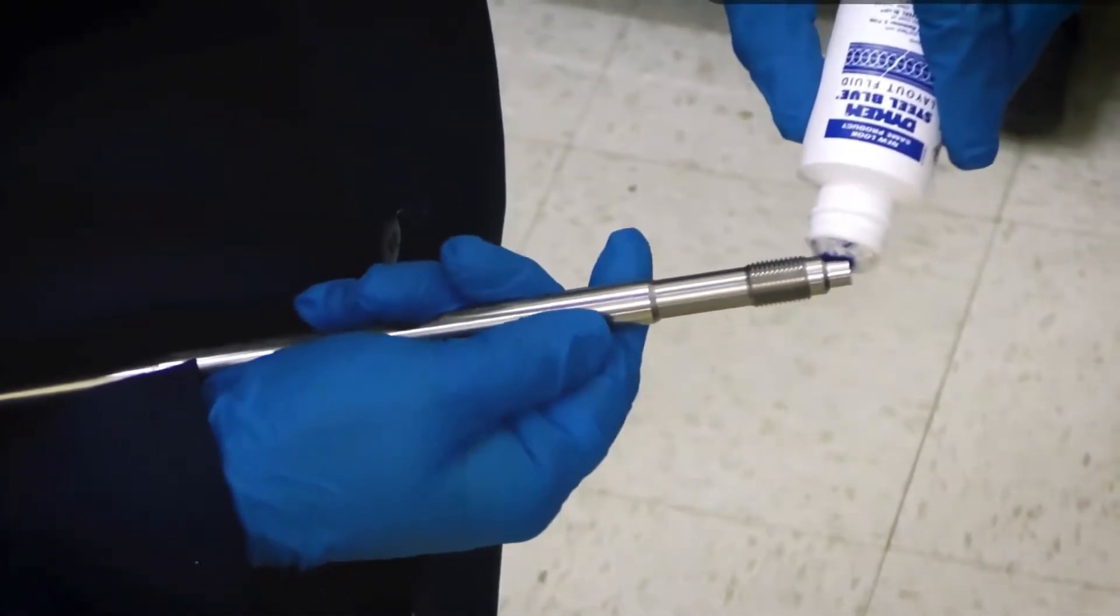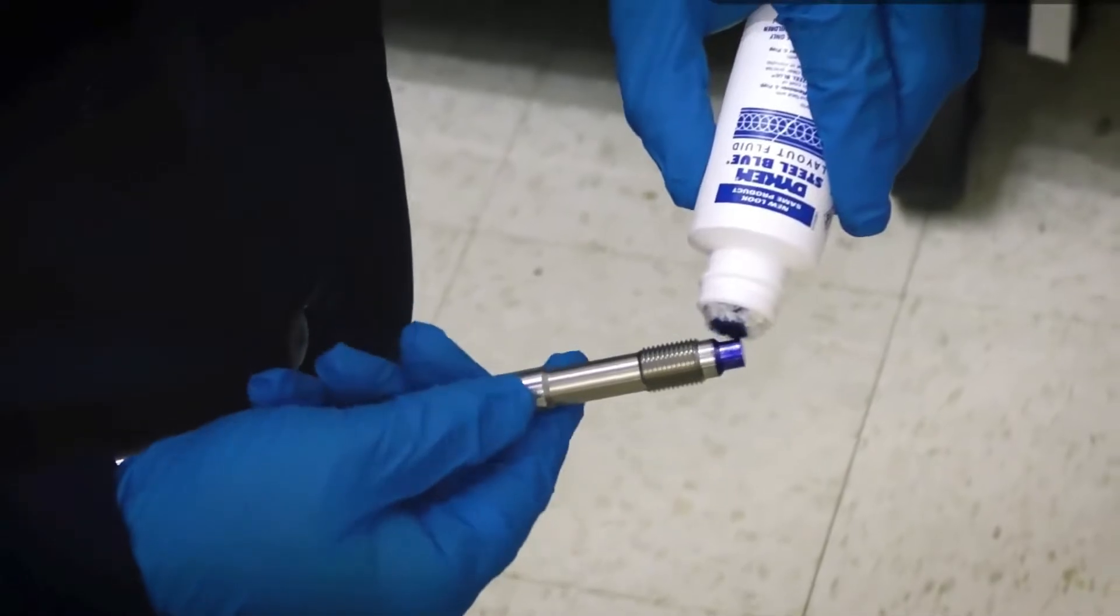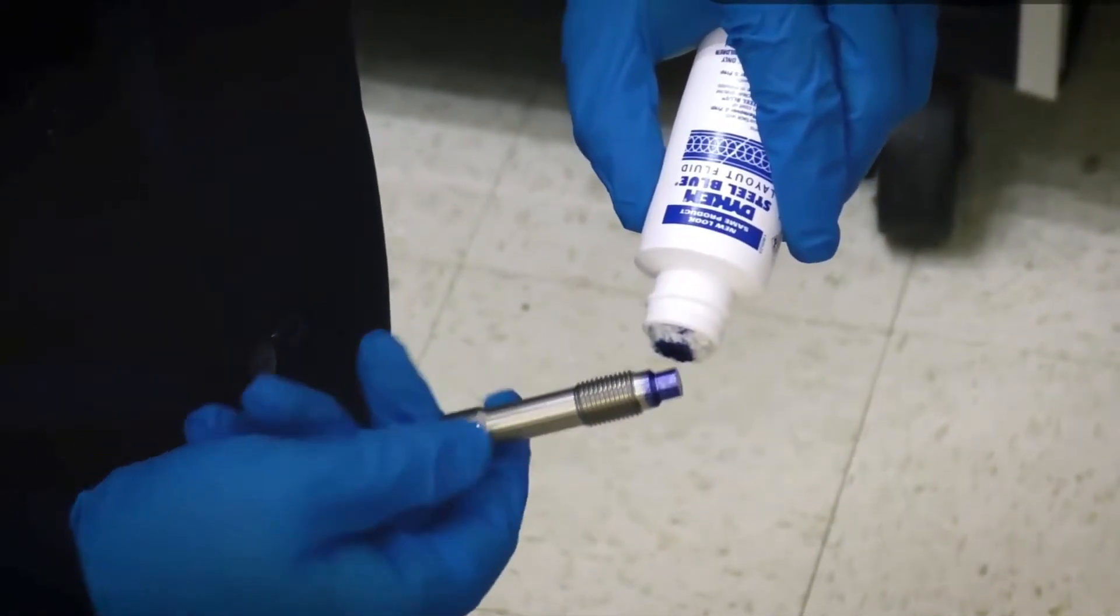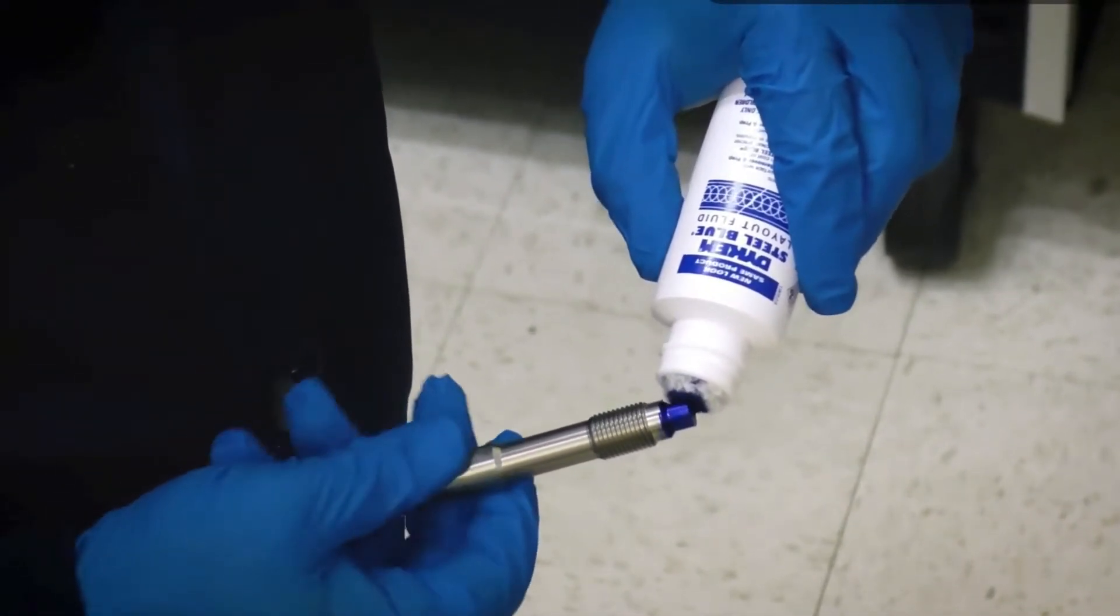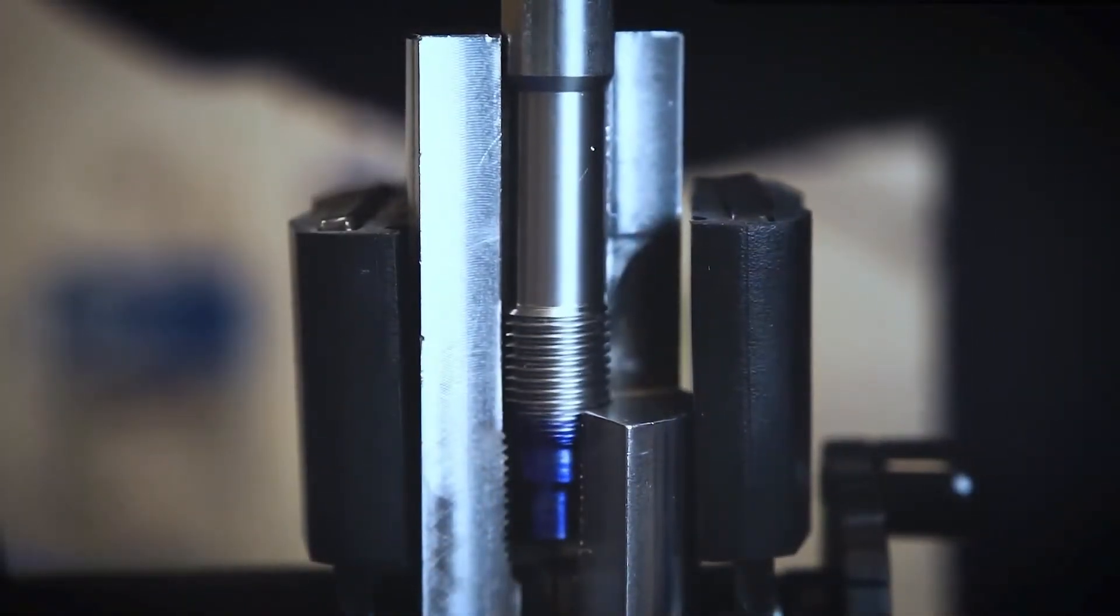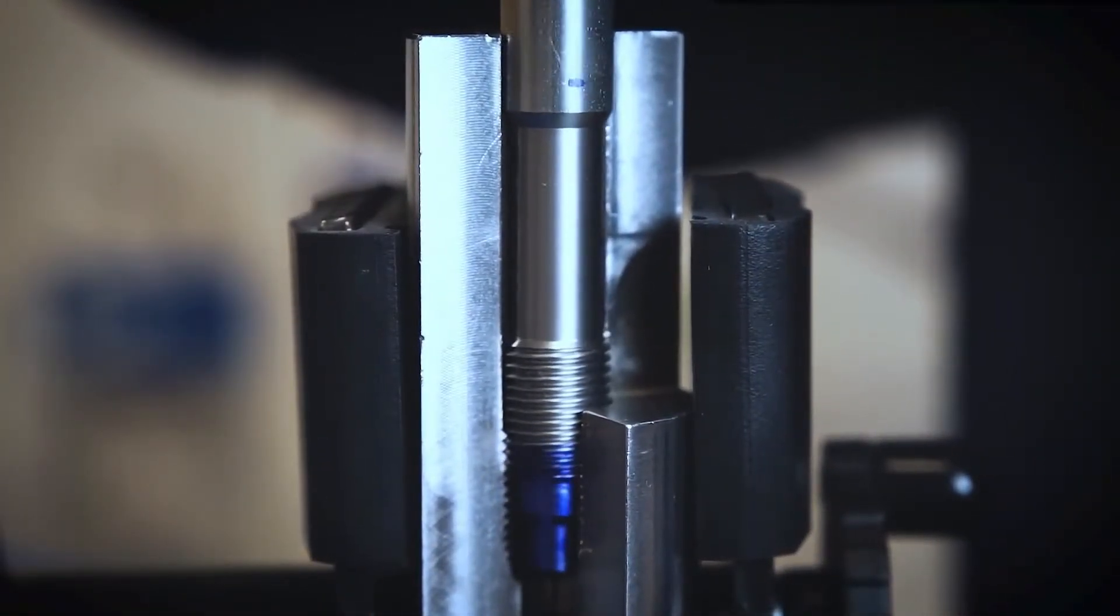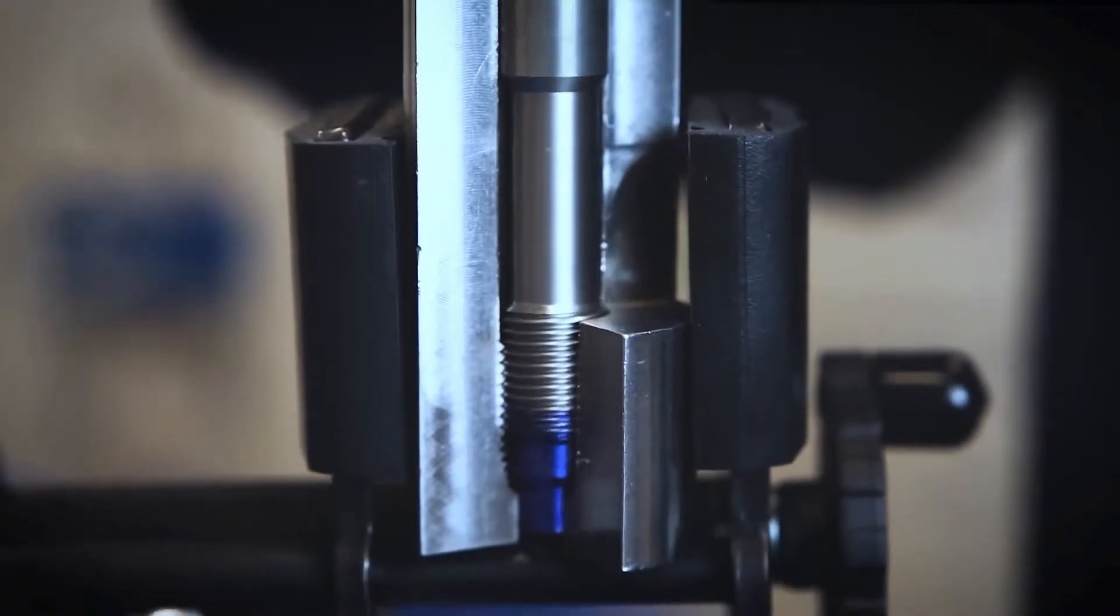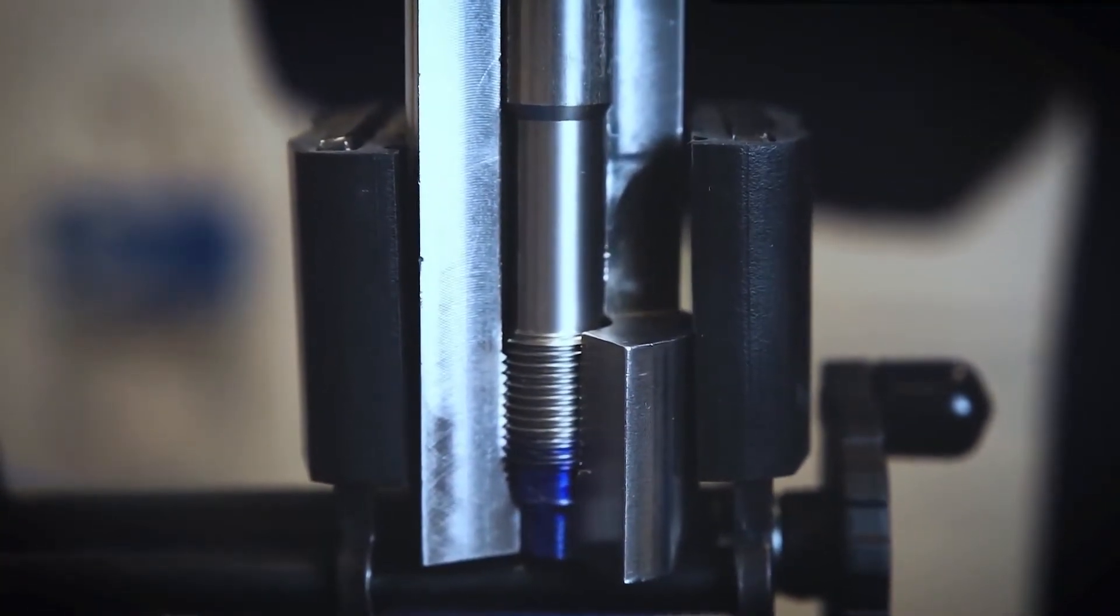After the hole has been properly cleaned, the technician uses the gauge plug that is included in the kit to check the mounting hole for contact points via the Dykem machine blue. The Dykem should not be missing around the edge of the tip. Only the 45-degree seat will make contact.